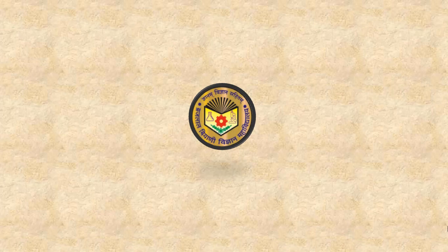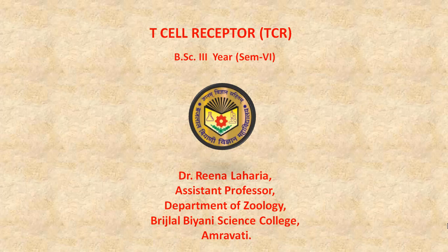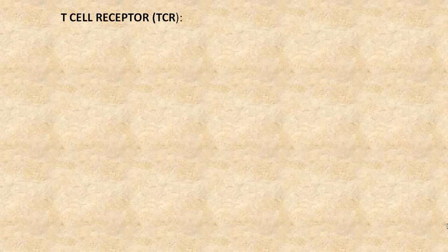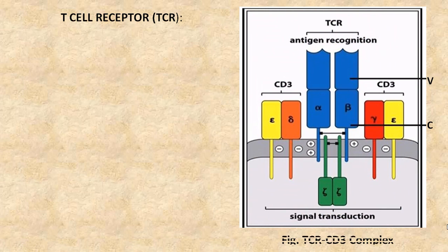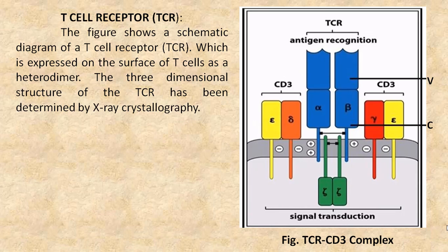Hello friends. Today we are going to see the topic T cell receptor. The figure shows a schematic diagram of T cell receptor, which is expressed on the surface of T cells as a heterodimer. The three-dimensional structure of T cell receptor has been determined by X-ray crystallography.